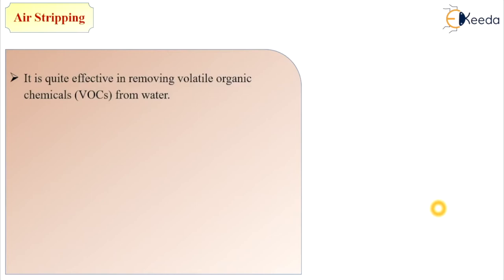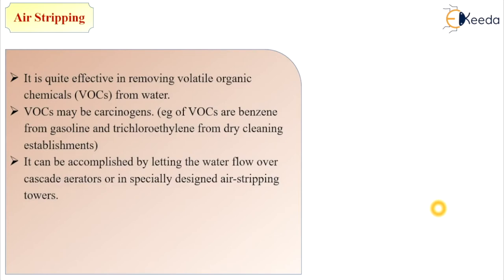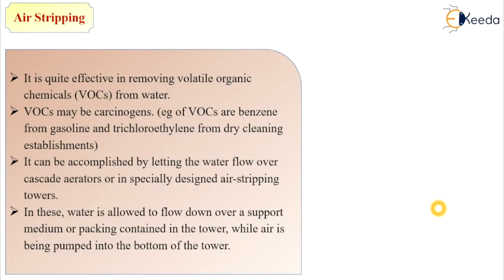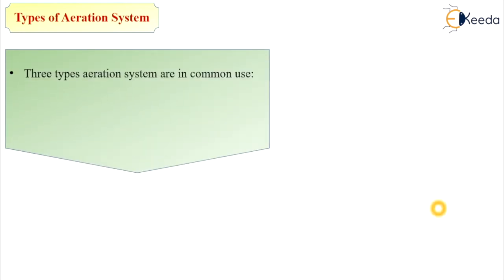Under spray aerators, subtypes include aeration by nozzle and air stripping. Air stripping is quite effective in removing volatile organic chemicals present in water. Volatile organic chemicals may be carcinogenic — for example, VOCs such as benzene from gasoline and trichloroethylene from dry cleaning establishments. This can be accomplished by letting water flow over a cascade aerator or in specially designed air stripping towers, where water falls over a support medium while air is pumped into the bottom of the tower.